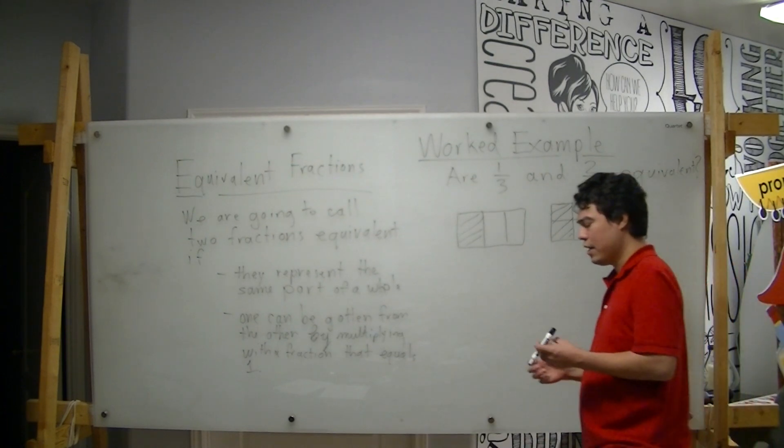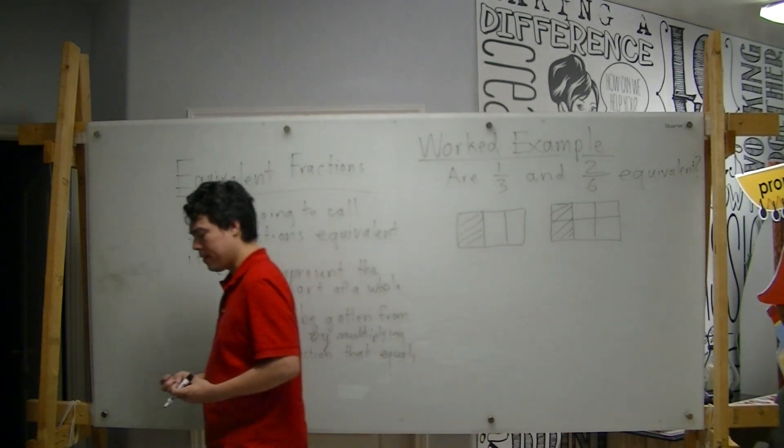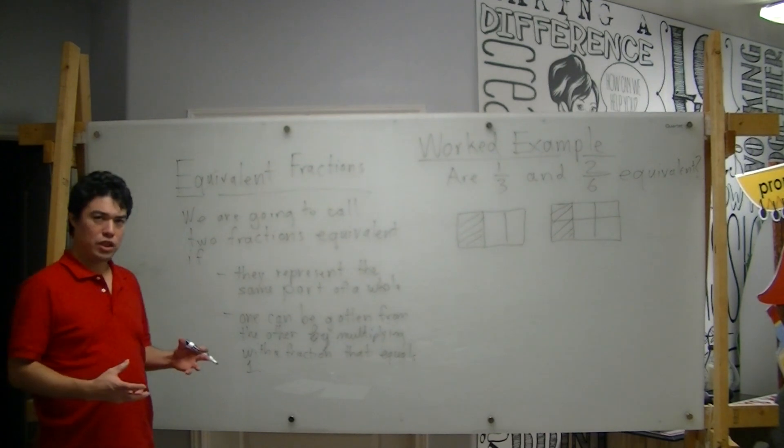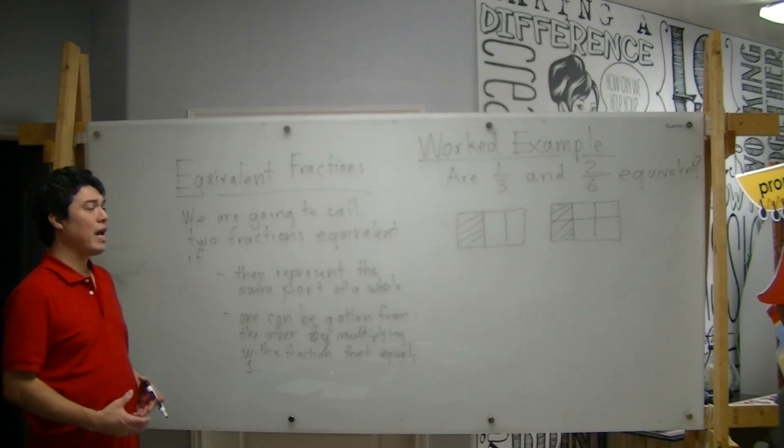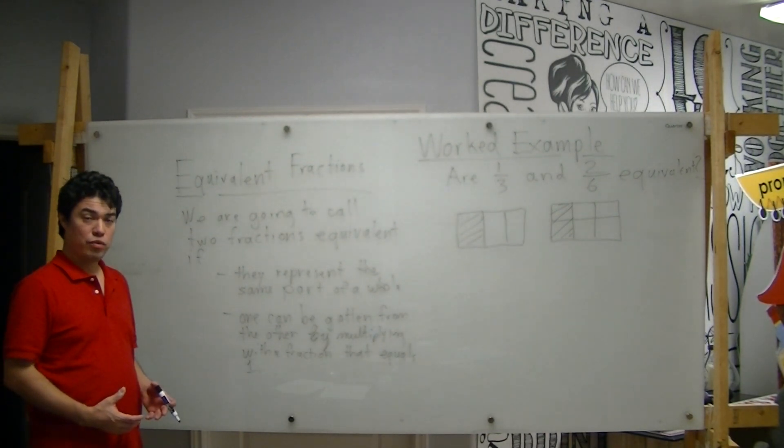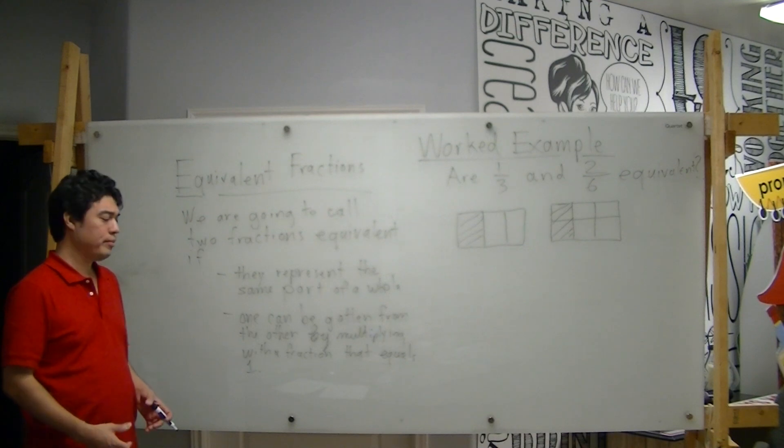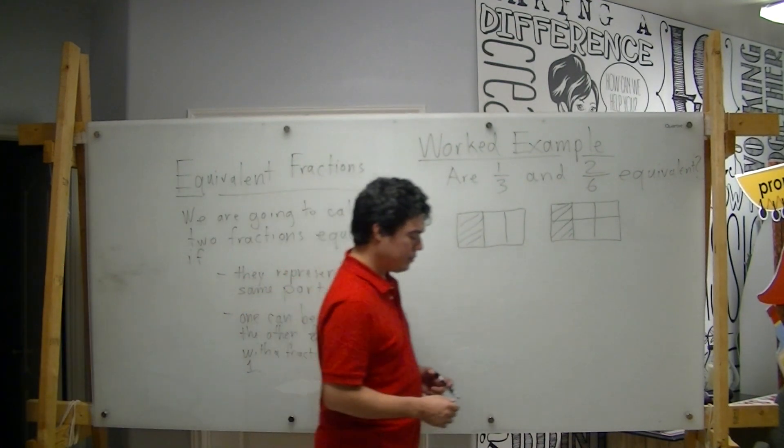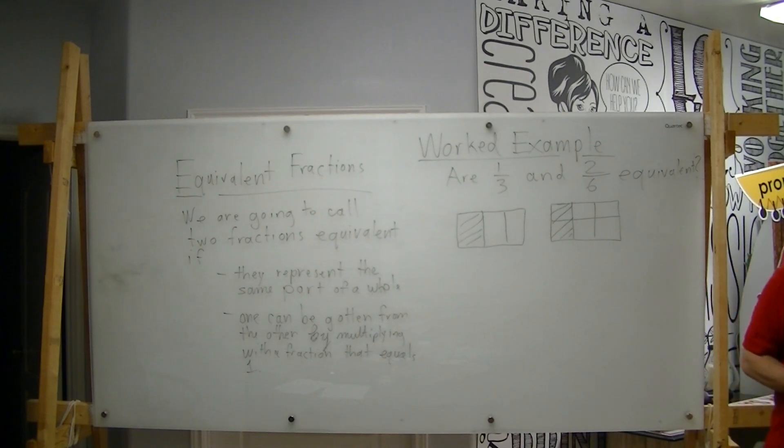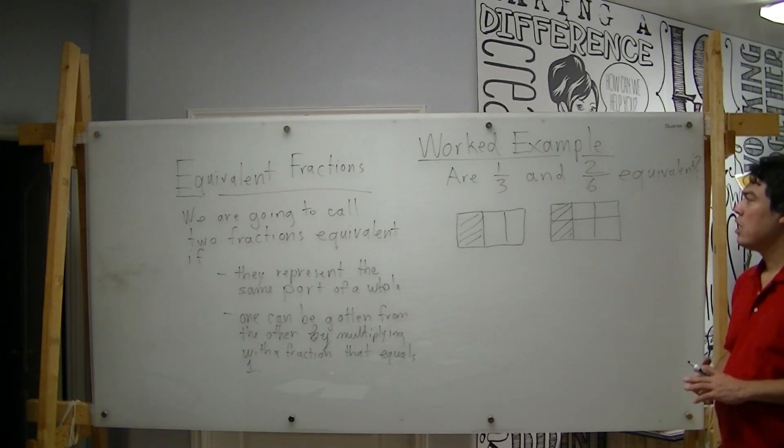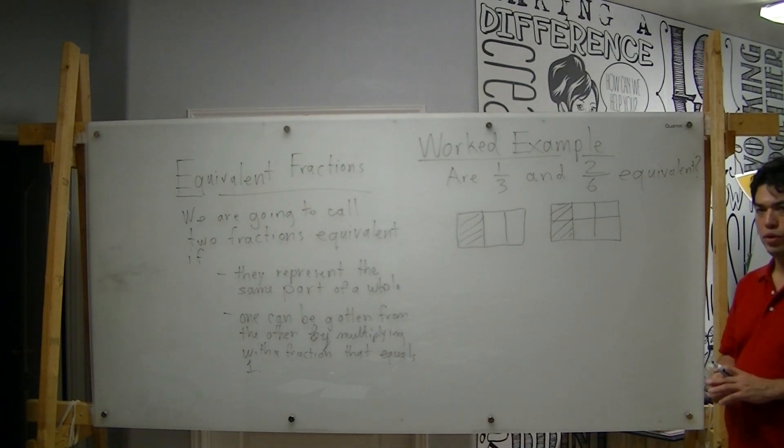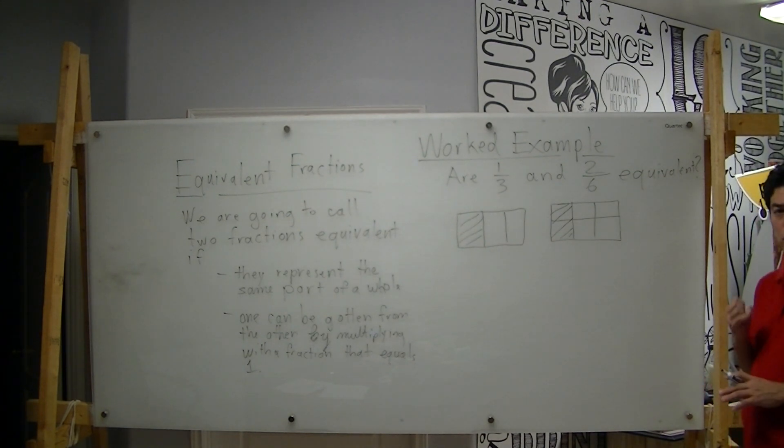Now, I want to see, can I find a fraction that equals one that I can multiply by one of these two fractions to get the other. And indeed, I want you to think about this for a second. What would that be? And now, let me show you that the answer is two over two.